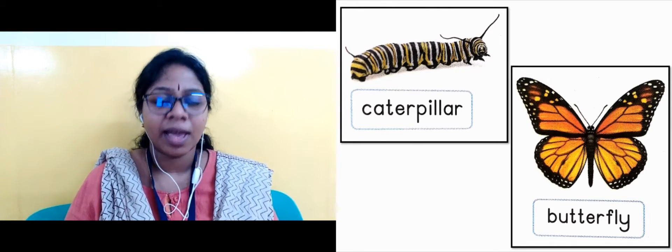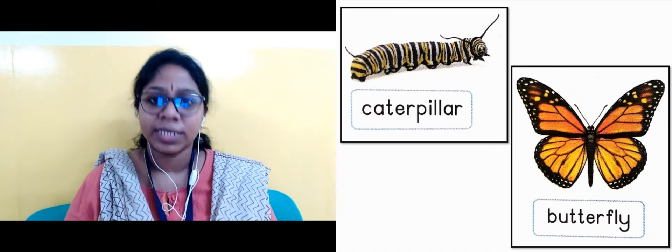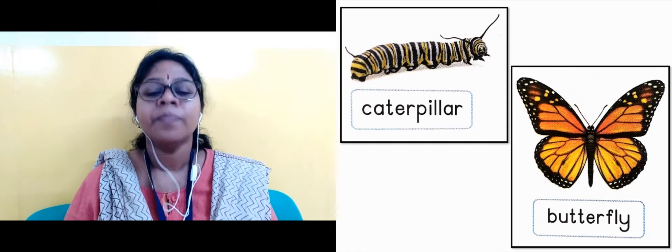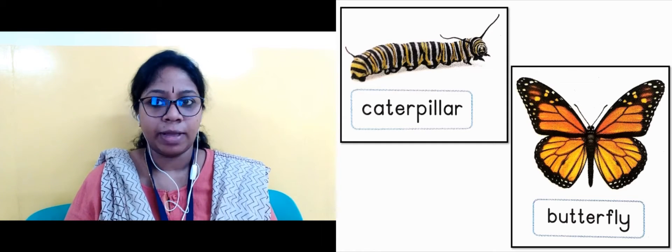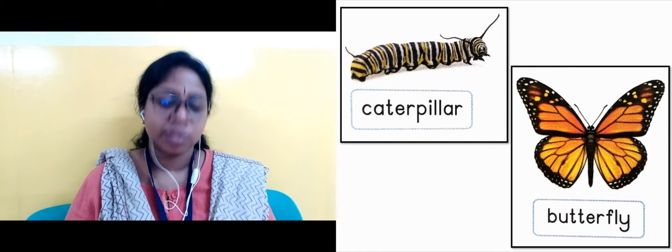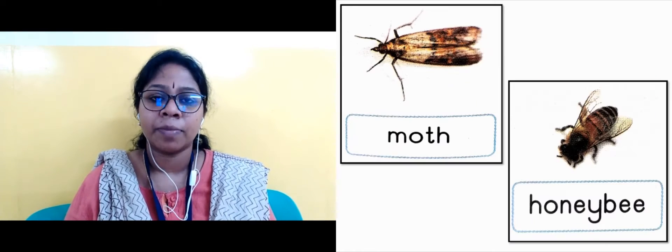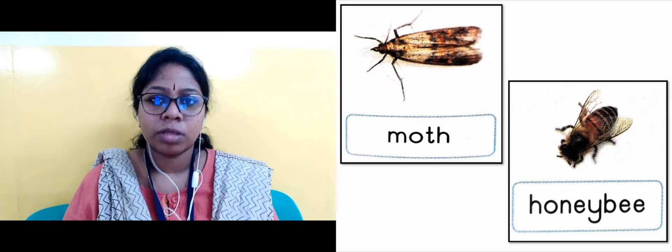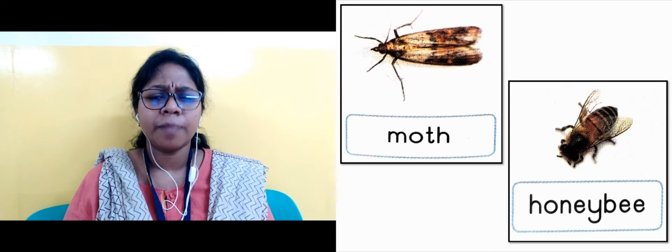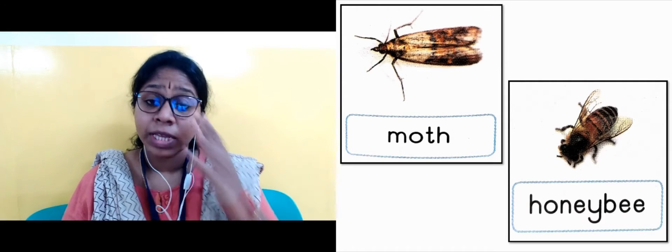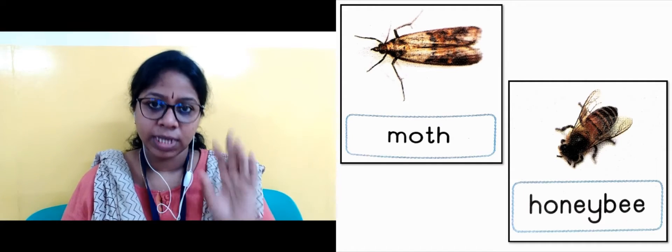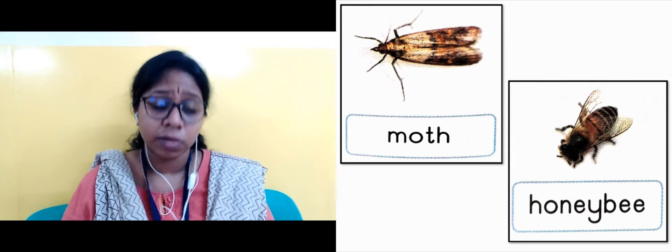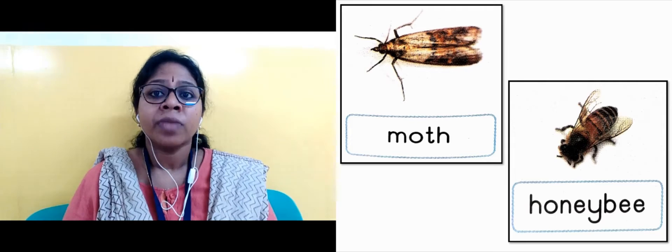Next one is butterfly — as you all know, it's a butterfly. Next, in the next slide, the image is moth. Moth also has wings; it's a small insect.